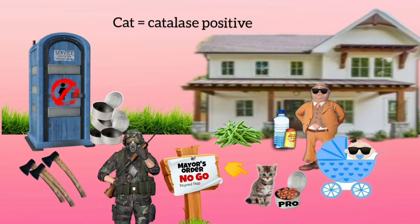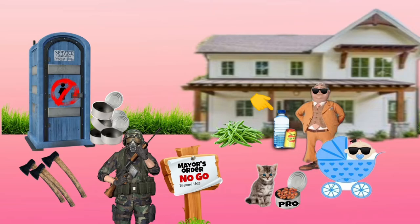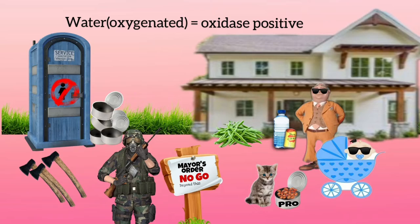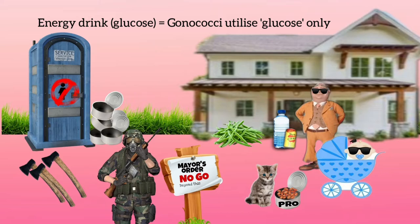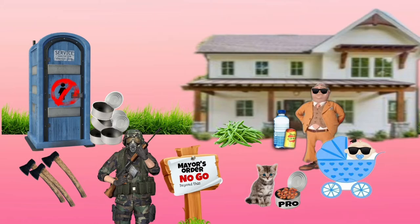The mayor is carrying a water bottle and a can of energy drink. The water bottle will remind you that it is an oxidase-positive organism, because water has a lot of oxygen. The can of energy drink — as energy drinks have a lot of glucose — reminds you that gonococci ferments only glucose.